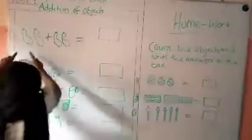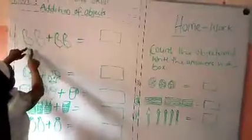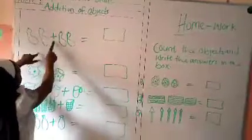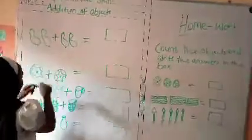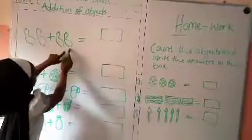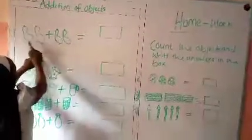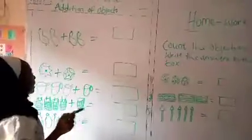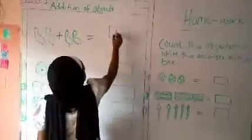Number 1, we have granite here. 1, 2, plus 2. Let's count it. 1, 2. You add this plus these 2, you add it to get again. 1, 2, 3, 4. How many granites are there? There are 4 granites.